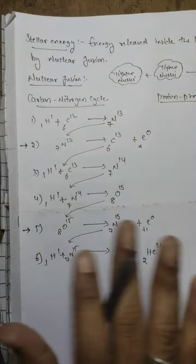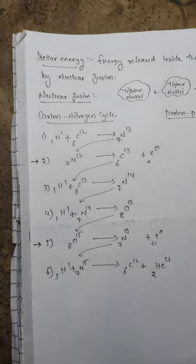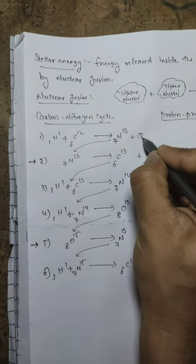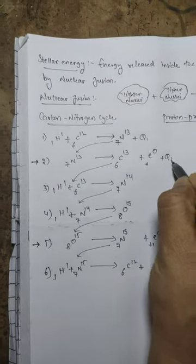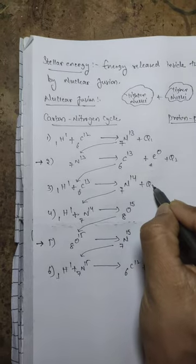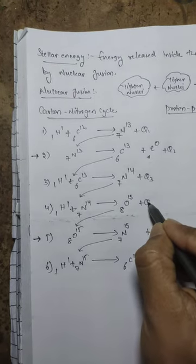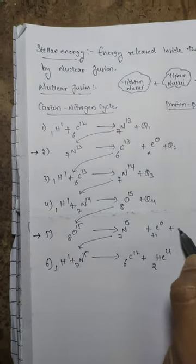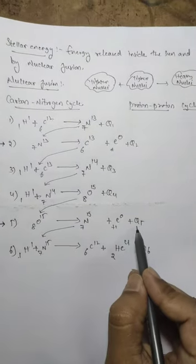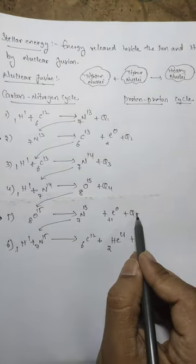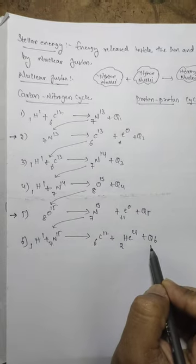In every step, some amount of energy is released. I am marking these energies as Q1, Q2, Q3, Q4, Q5, and Q6 for the six steps of the carbon-nitrogen cycle.